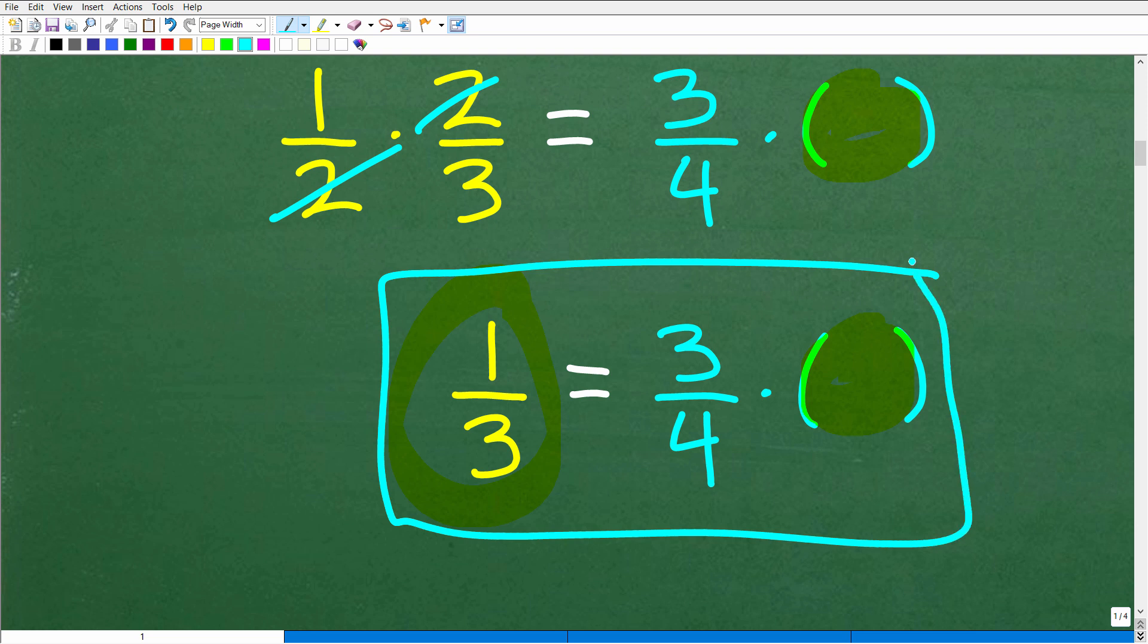Now, at this point, you might be saying to yourself, well, can I figure out this fraction right here? What fraction or what number times 3 fourths will give me 1 third? That's what I have to figure out, right? That's what we call the solution. So a lot of you might be like, hmm, I don't really know how to do this.